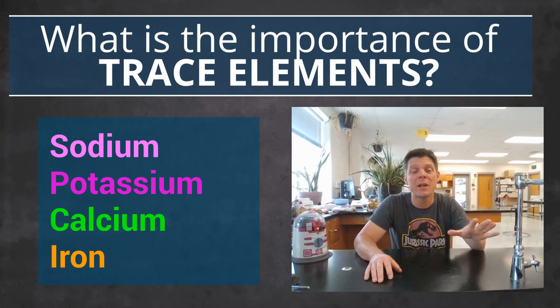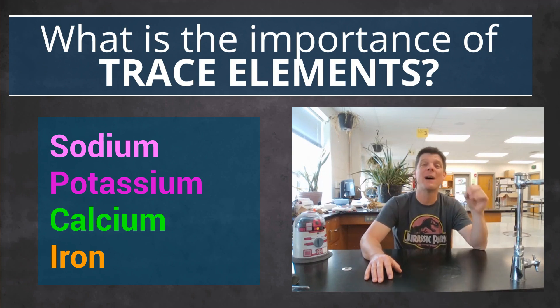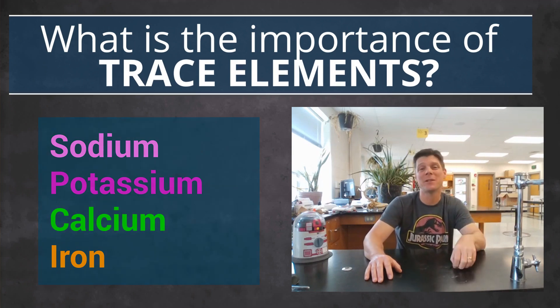These trace elements play key roles in the nervous system, muscular system, bone formation, and transport of oxygen in the bloodstream. As the animals eat and digest their foods, they are able to extract molecular building blocks and atoms their metabolism needs to assemble the molecules required by their bodies.